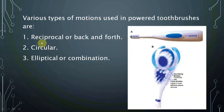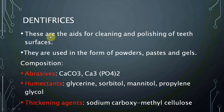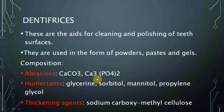Power toothbrushes have various types of motion: reciprocal (back and forth), circular, elliptical, or a combination. Dentifrices are the next part of mechanical plaque control — they are aids for cleaning and polishing teeth, available in powder or paste forms. Their composition includes an abrasive such as calcium carbonate or calcium phosphate, and humectants like glycerin, sorbitol, or mannitol.